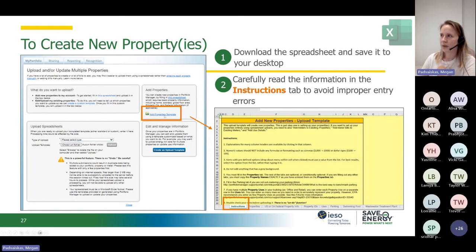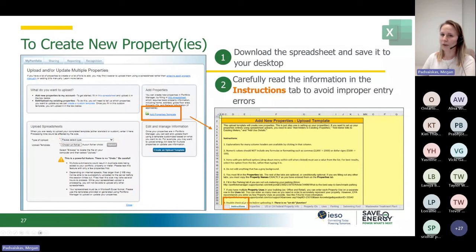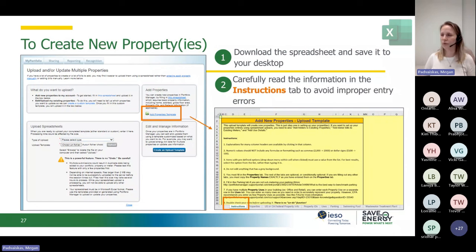If you want to download the spreadsheet for adding multiple properties, follow the path I just mentioned and click on the Add Property Template. Download this spreadsheet and save it to your desktop. I really suggest carefully reading all the instructions — if you upload a spreadsheet with errors, it won't upload properly. Don't try to edit anything in the spreadsheet: avoid changing or adding columns or changing the format type. Numeric values should not have any commas or dollar signs — just a plain number.